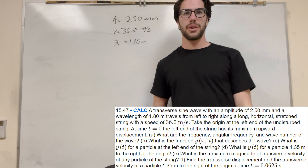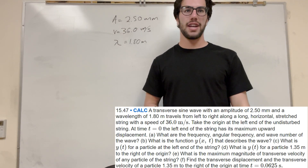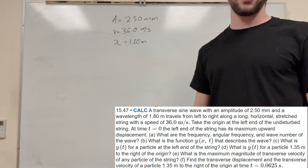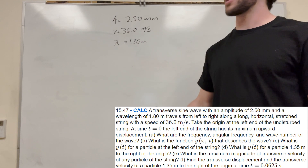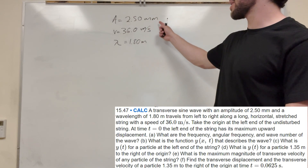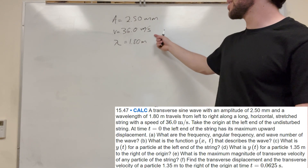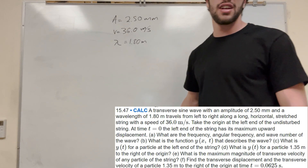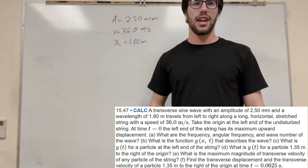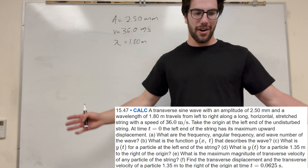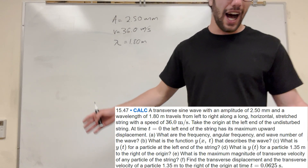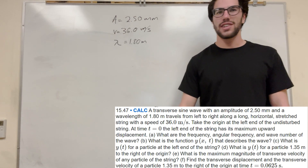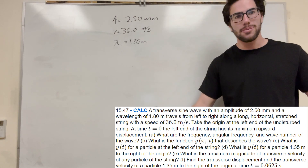What's up Calv gang? Alright, so we got this wave problem basically. You got a transverse sine wave and it gives you these functions — the amplitude, the velocity, and the wavelength. And it gives you like 50 parts, like it goes up to i. That's probably why you're here. You don't want to solve all these problems. I don't blame you.